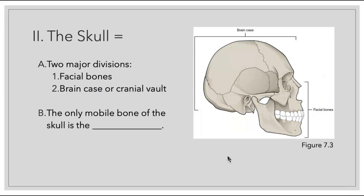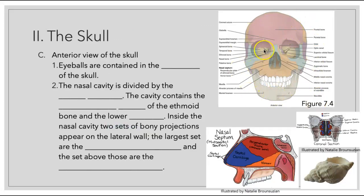The skull is really divided into two major divisions. We've got the facial bones which help make up our facial features, and then we've got the brain case or the cranial vault which is there to protect our brain and serve as areas where we're going to have sensory structures. The only mobile bone of the skull is going to be the mandible — our lower jaw. When we look at an anterior view of our skull, our eyeballs are contained in the orbit, and when we move into the nasal cavity area, this is divided by a structure in the middle known as the nasal septum, created by pieces of bone as well as cartilage.